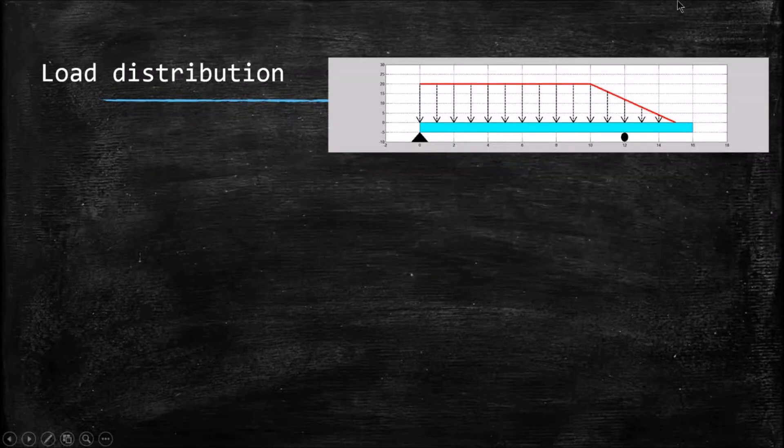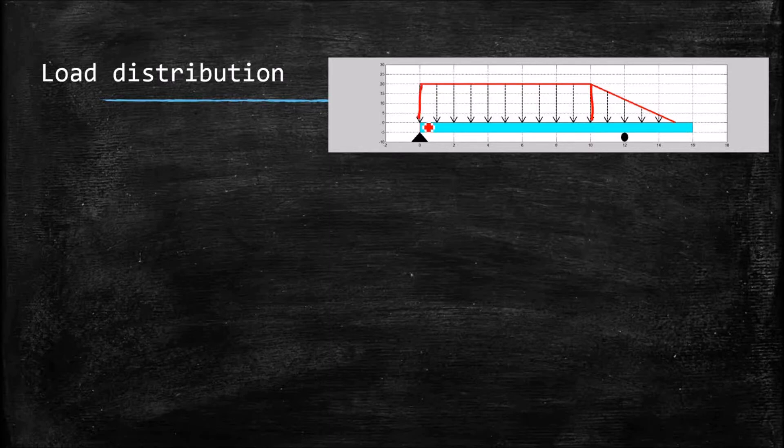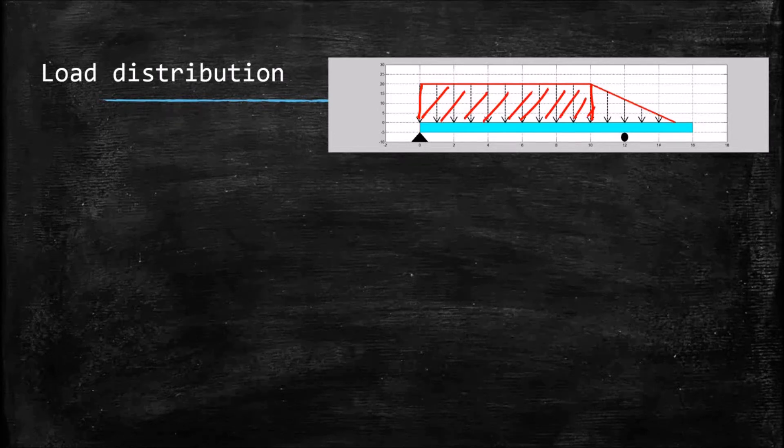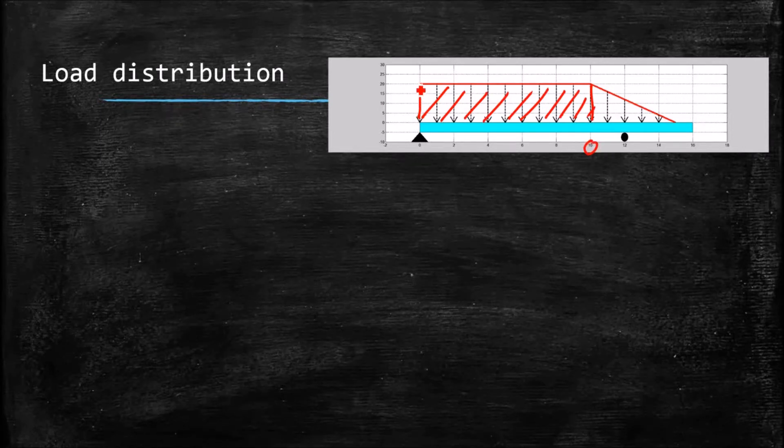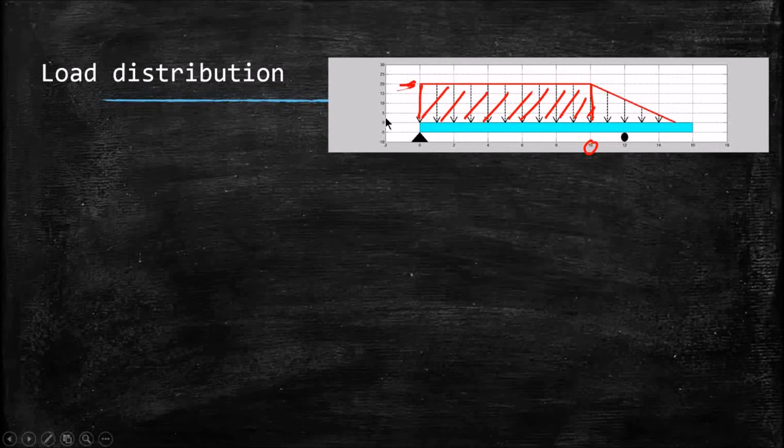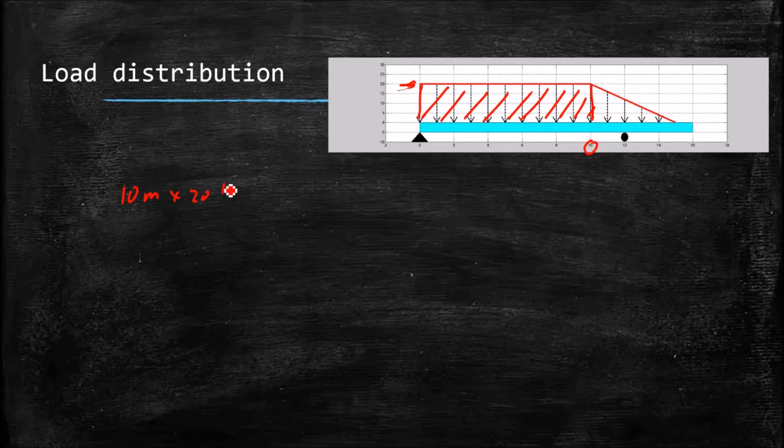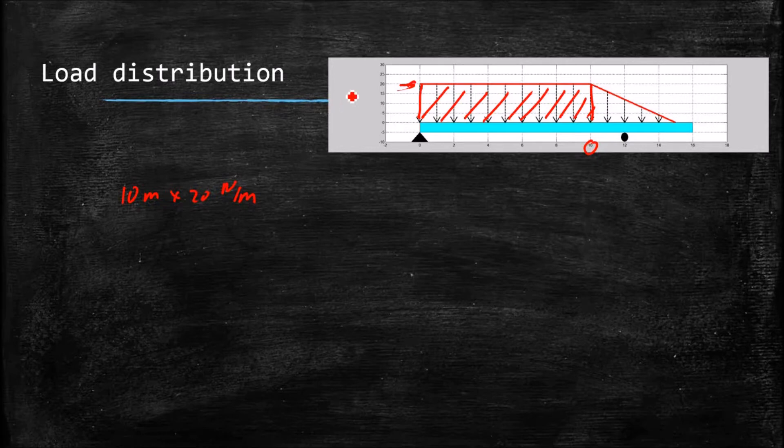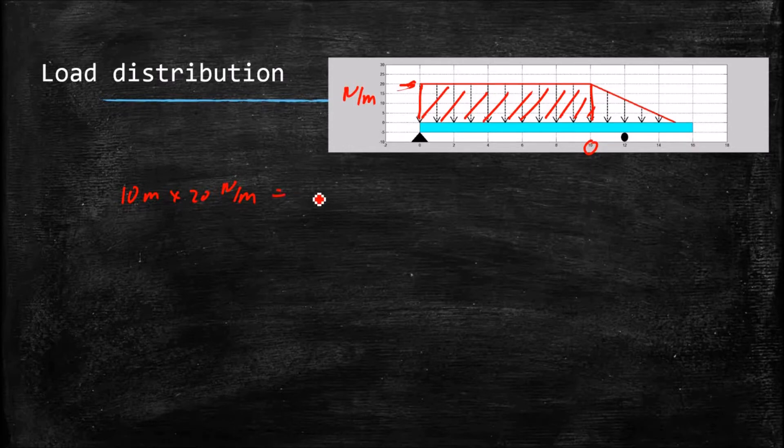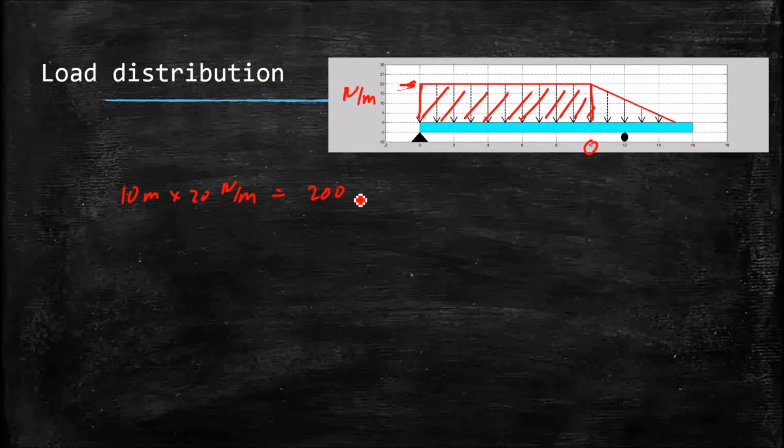Let's start. I'm going to start out by looking at this section right here, the rectangular section. I see that it has a length of 10 meters and a height of 20 newtons. So I can come up with the total force by inspection. Really, I can say that 10 meters times 20 newtons per meter, it's newtons per meter, is our load distribution. So that gives us a 200 newton force.